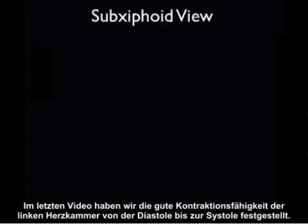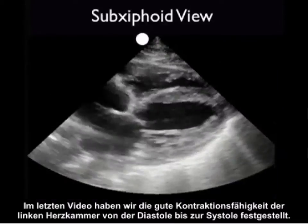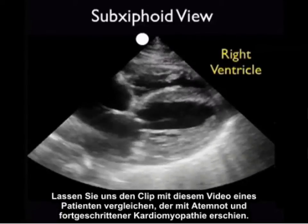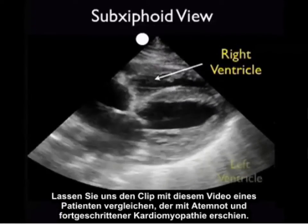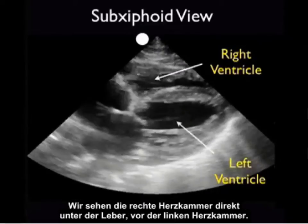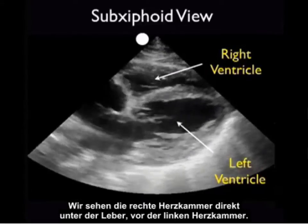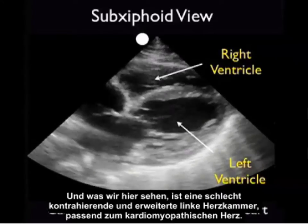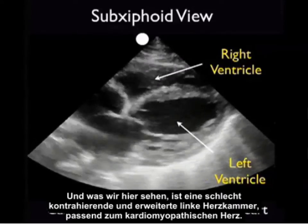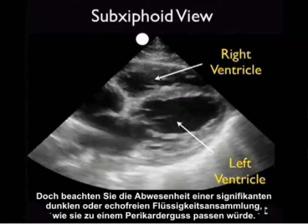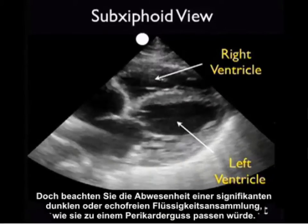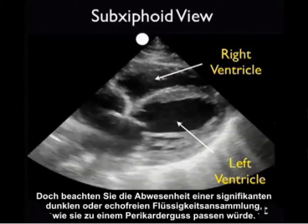In that last video clip, we noted good contractility of the left ventricle from diastole to systole. Let's contrast that clip to this one from a patient who presented with shortness of breath and advanced cardiomyopathy. We see the right ventricle just below the liver, anterior to the left ventricle. What we see here is a poorly contracting and dilated left ventricle consistent with a cardiomyopathy heart. However, note the absence of any significant dark or anechoic fluid collections consistent with a pericardial effusion.